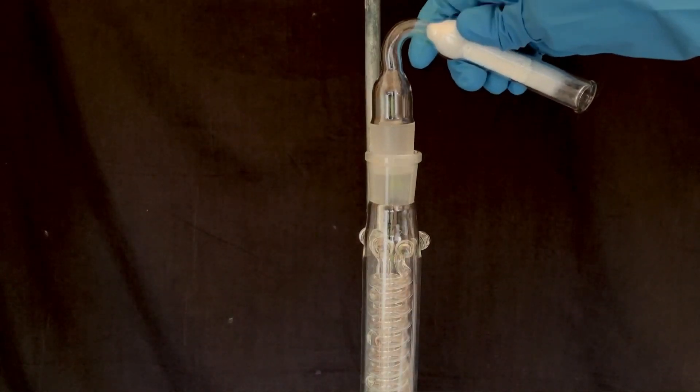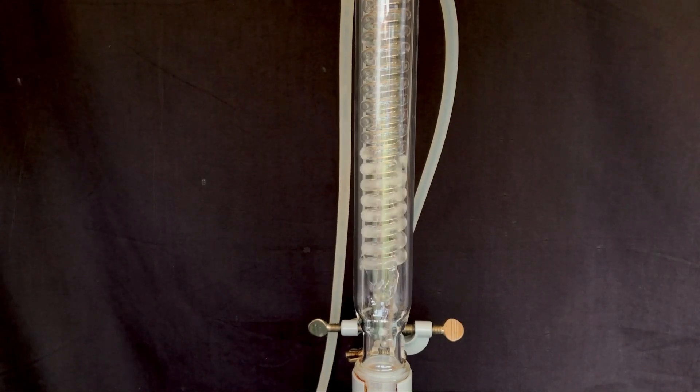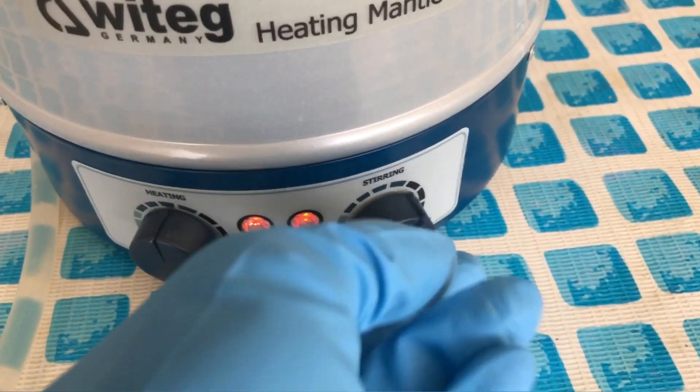The flask was then placed into a heating mantle and the reflux condenser was attached. Water would hydrolyze our product, therefore a calcium chloride filled drying tube was attached to the top. In order to begin with the actual preparation, the reflux condenser was flushed with water and heating and stirring were turned on.